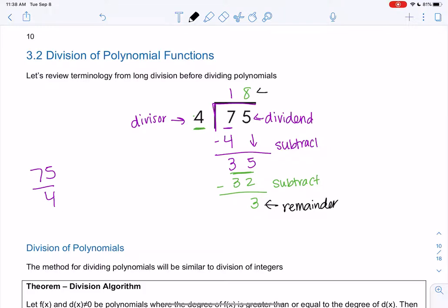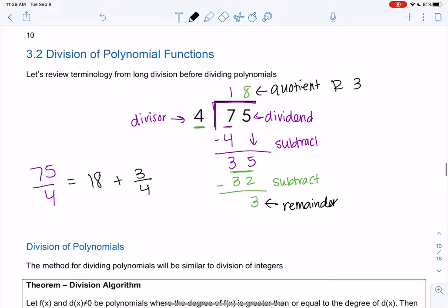And we called 18 the quotient, the result from division. So we would say 75 over 4 is equal to 18, and then we did plus the remainder over 4. So remainder 3 means 3 fourths, 3 out of 4. So it will be remainder over divisor. And this will be the quotient. When we do polynomials, it's going to look really the same. It's just going to look trickier because it's variables and not numbers.